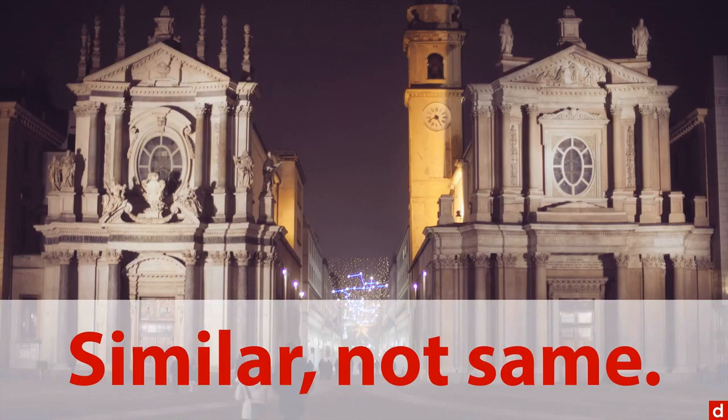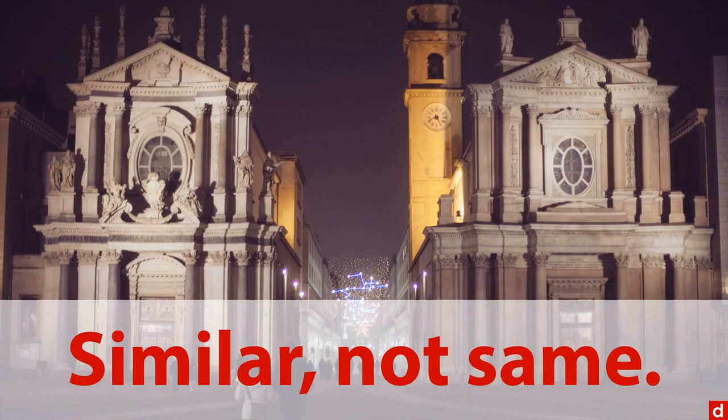Part of the problem stems from the fact that data science and big data both have Venn diagrams associated with them. So for instance,